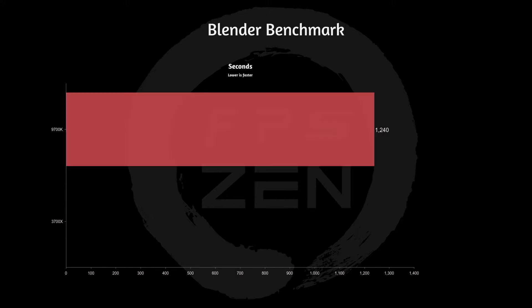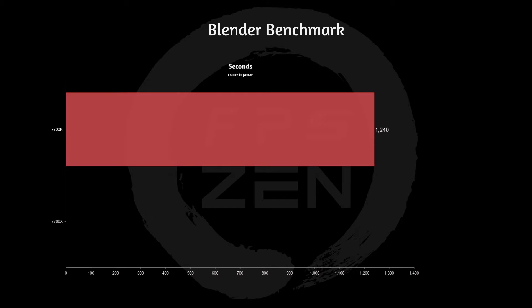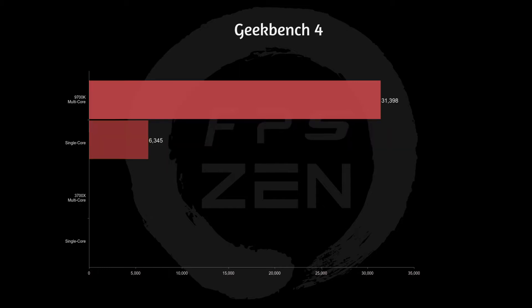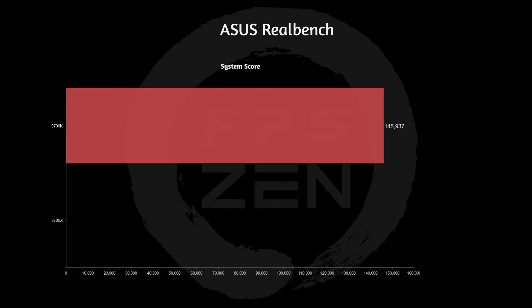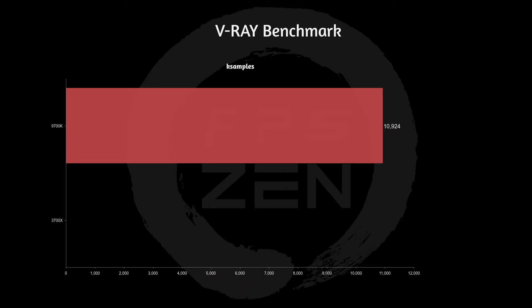Moving on to content creation benchmarks: in the Blender benchmark, we completed it in 1,240 seconds. In Geekbench 4, single-core score was 6,345 and multi-core was 31,398. In Cinebench R15, single-core was 213 and multi-core was 1,615. In Cinebench R20, single-core was 512 and multi-core was 3,904. In ASUS RealBench, system score was 145,937. In the V-Ray benchmark, we got 10,924 K-samples.